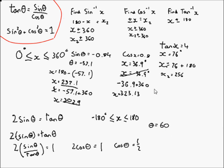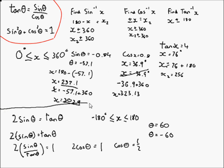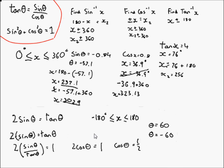Dividing both sides by tan theta gives 2 sine theta over tan theta equals 1. Using sine theta over tan theta equals cos theta, we get 2 cos theta equals 1, so cos theta equals a half. From trigonometric ratios, theta equals 60 degrees. Using the plus or minus rule, theta also equals minus 60 degrees. Adding or subtracting 360 takes both answers outside the range, so the two solutions are theta equals 60 and theta equals minus 60. This rearrangement-type question is much more likely to appear on an exam.